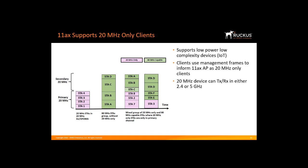A 20 MHz only device can transmit and receive in either the 2.4 or 5 GHz band. Examples of IoT devices are BLE and Zigbee sensors, medical devices, thermostats, and so forth — they do not require high-bandwidth operations. 11ax has a protocol where 20 MHz only devices communicate solely on the primary 20 MHz channel. I'm showing a 40 MHz channel, but it could be extended to 80 or 160 MHz. All 20 MHz packet exchanges occur in the primary 20 MHz, while normal clients can operate in the upper secondary channel. You can mix and match normal clients and 20 MHz only clients in the primary channel as well, making it very flexible. The key is that these 20 MHz only devices only have to operate in the primary 20 MHz band.